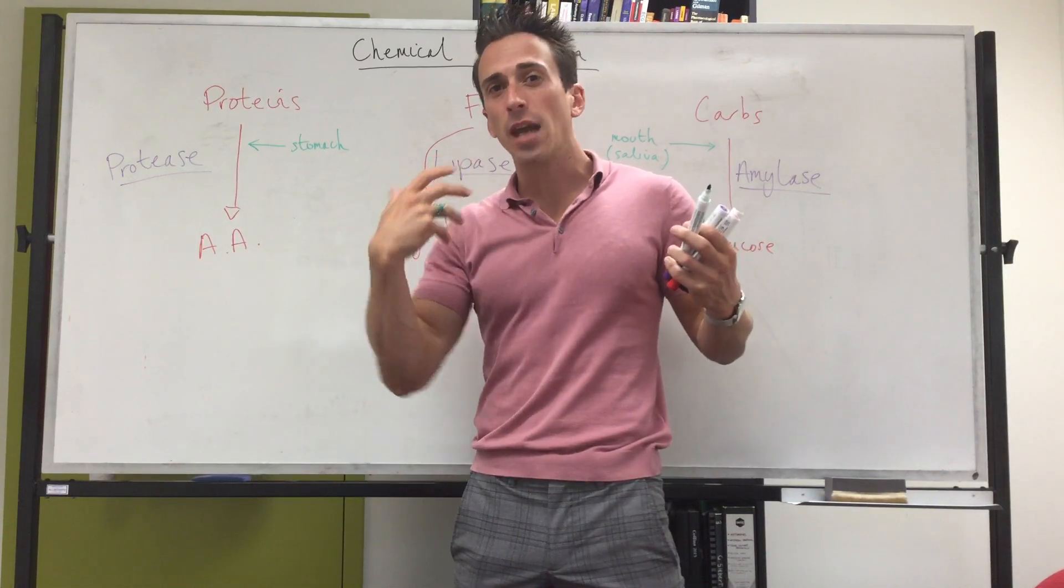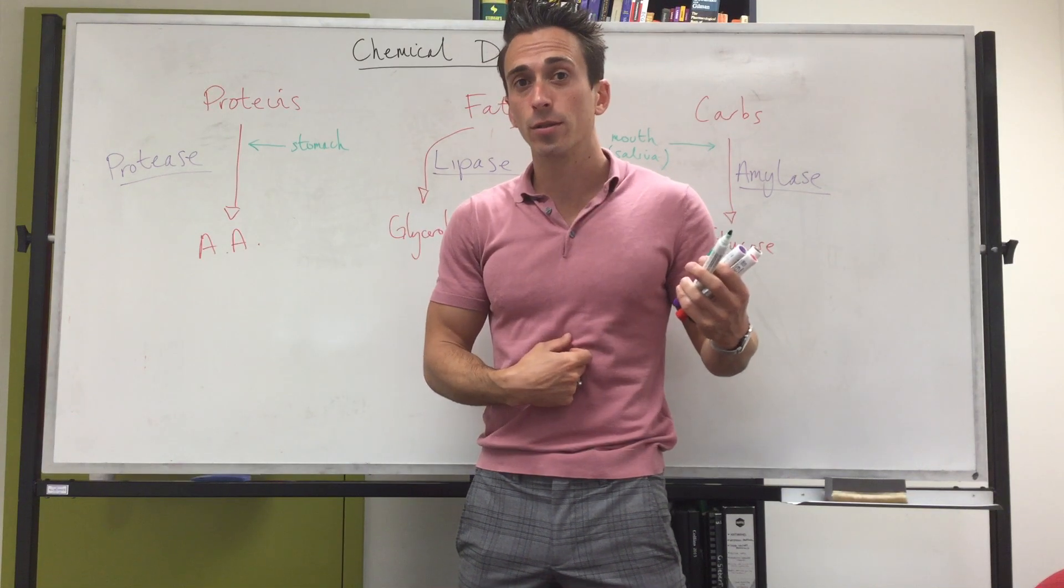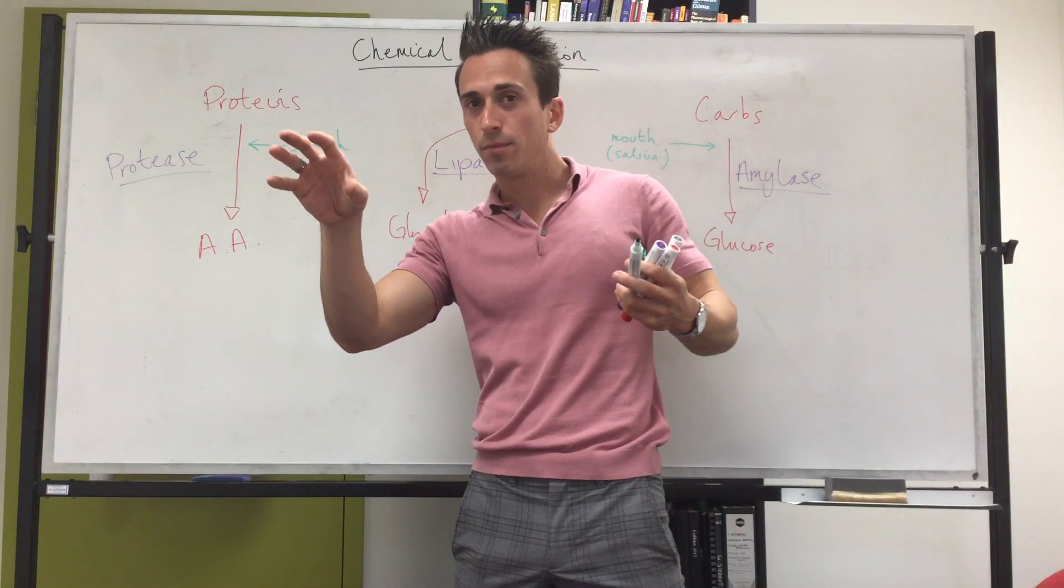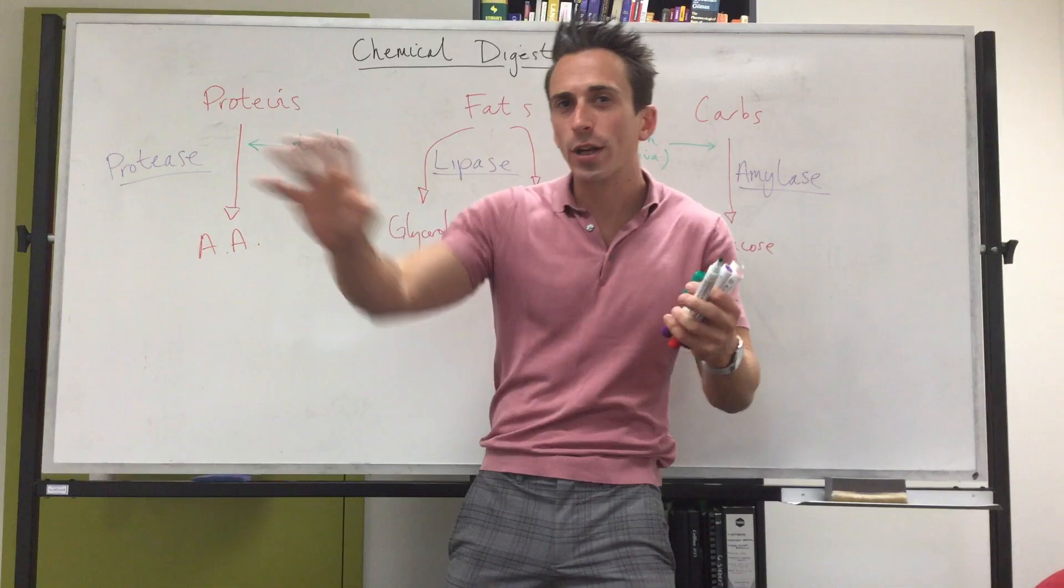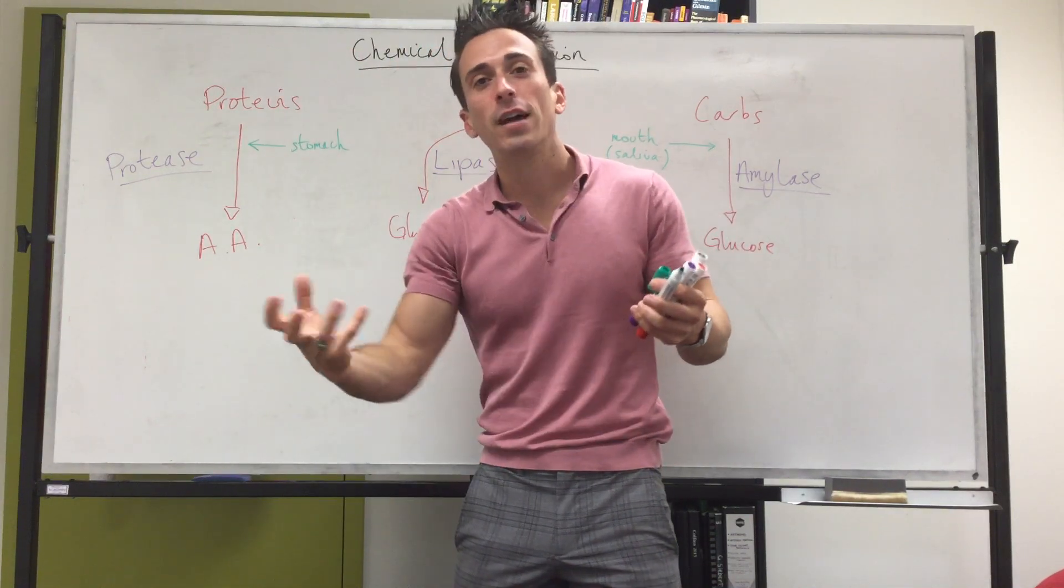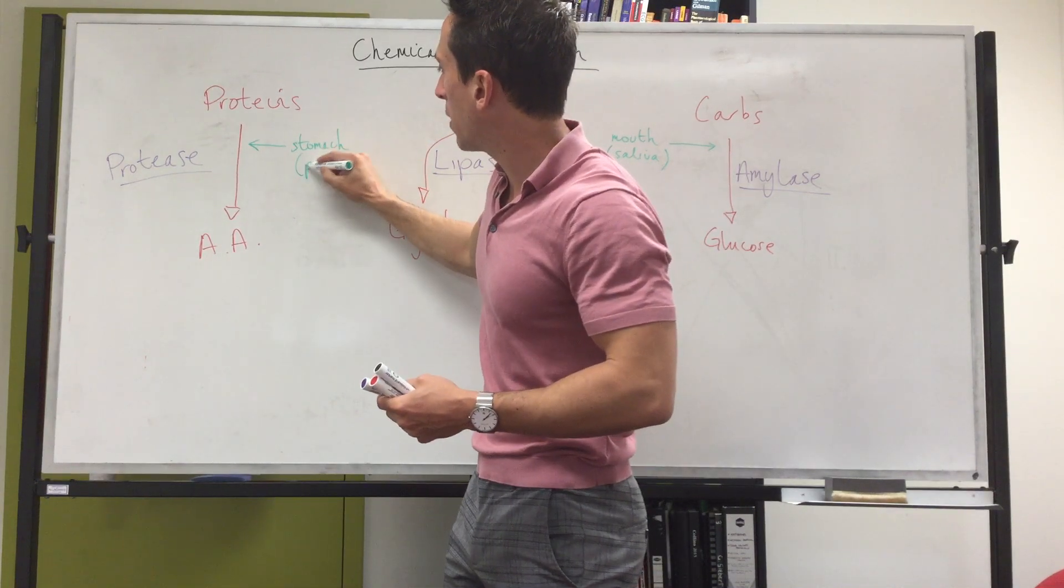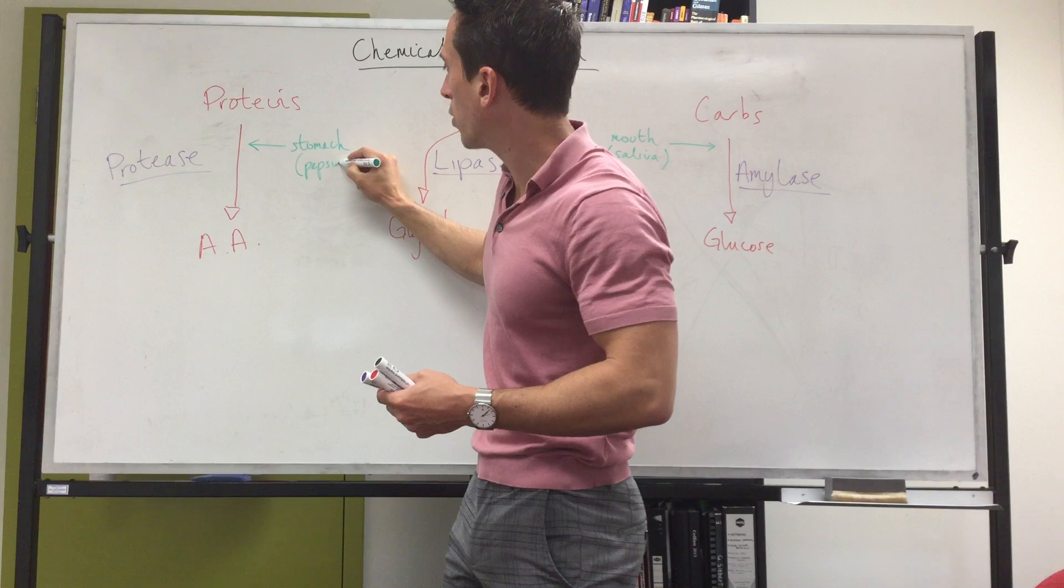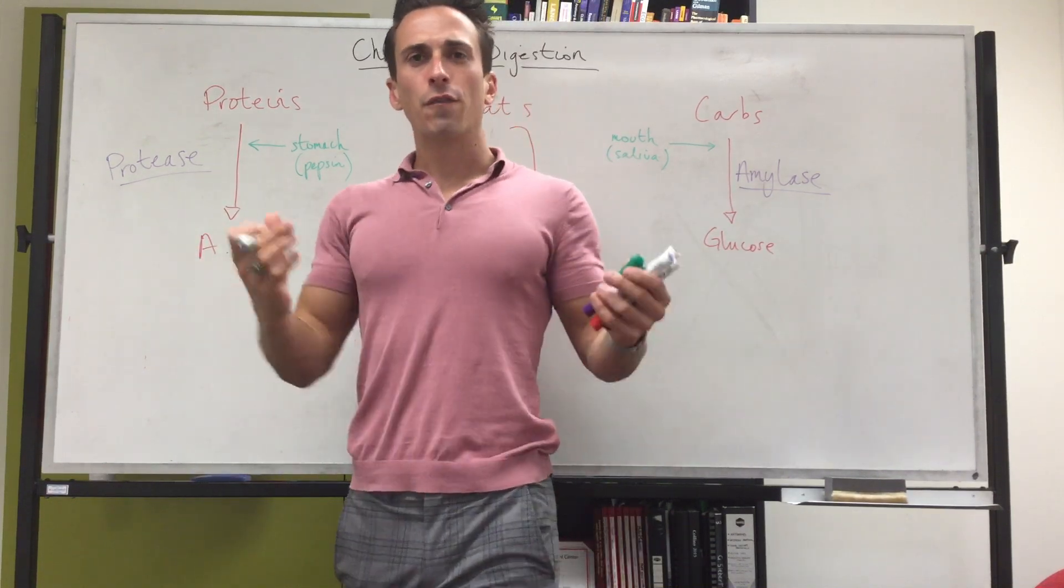Now the thing that activates pepsinogen is hydrochloric acid, and hydrochloric acid is released from another cell within the gastric pits of the stomach called parietal cells. So chief cells release pepsinogen, parietal cells release hydrochloric acid, hydrochloric acid travels to the pepsinogen and chops it and activates it into pepsin. And what does pepsin do? Well, pepsin breaks some of these chemical bonds of proteins—it's a protease.